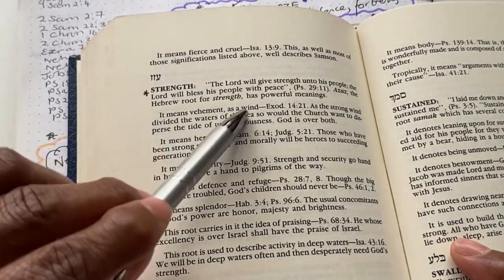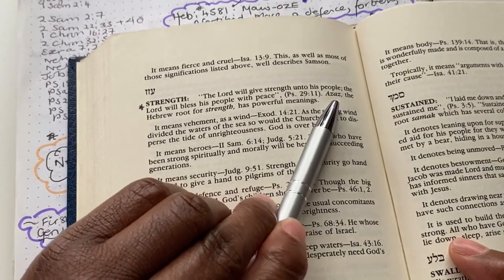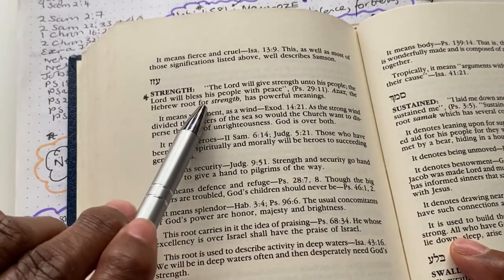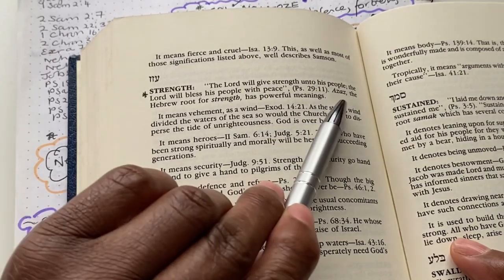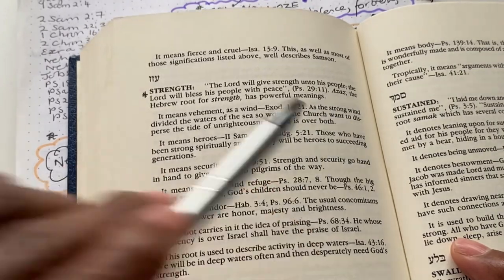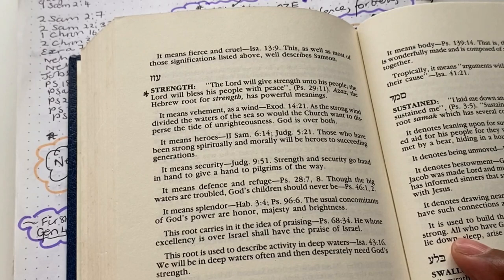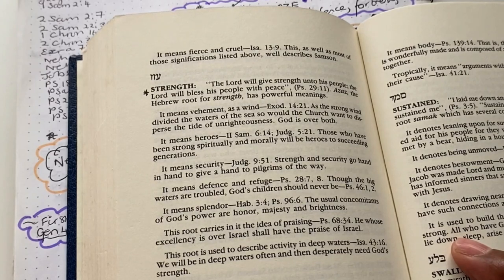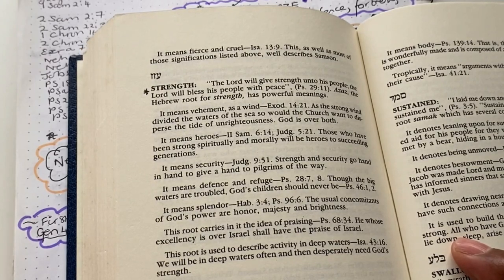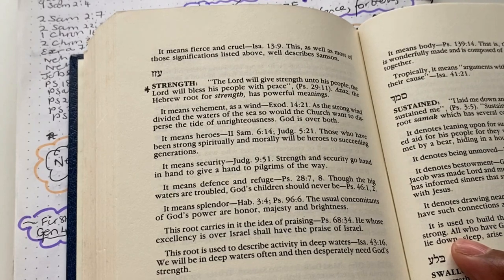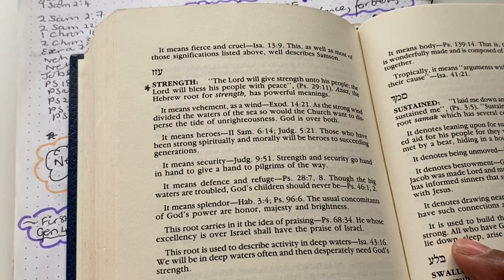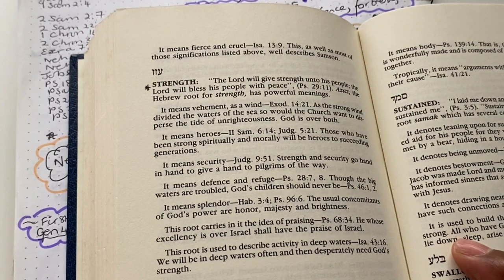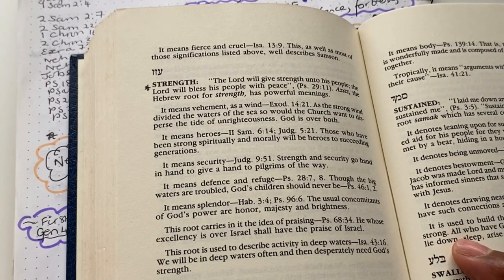Now, the meaning of strength here is azaz. The Hebrew root for strength has powerful meanings. So there are different Hebrew words and root words for the actual meaning of strength. In English, it means strength. In English, it means one thing, strength. But in Hebrew, depending on how you're using that word, it has different meanings.